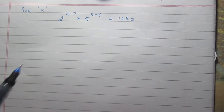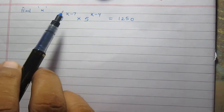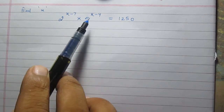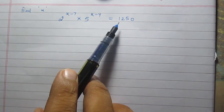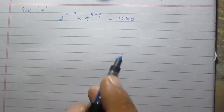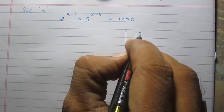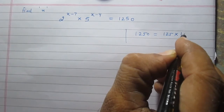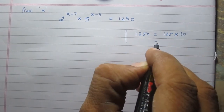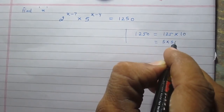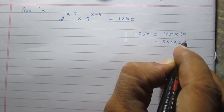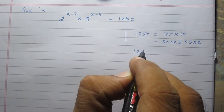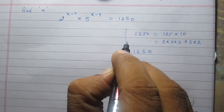Find x if 2 raised to the power (x minus 7) multiplied by 5 raised to the power (x minus 4) is equal to 1250. Now, 1250 is 125 multiplied by 10. 125 is 5 × 5 × 5, and 10 is equal to 5 × 2, so we can say that 1250...